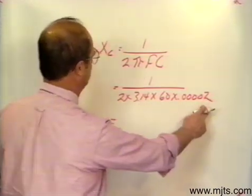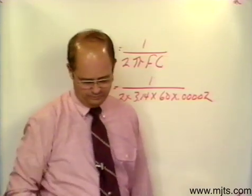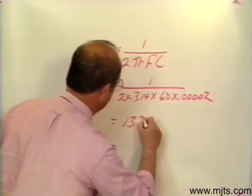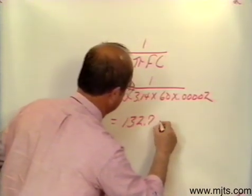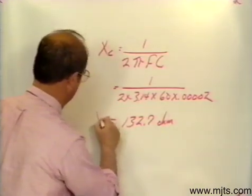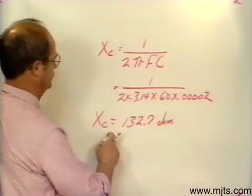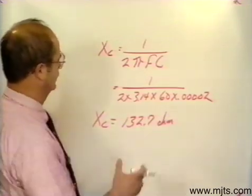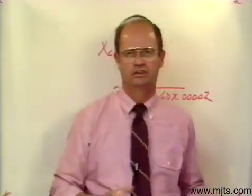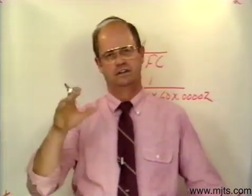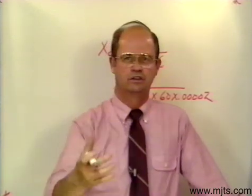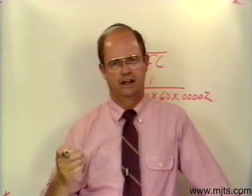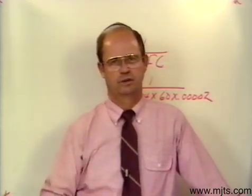If I multiply this out and divide that into one, we would come out with an answer of 132.7 ohms. Our capacitive reactance then is equal to 132.7 ohms. In other words, this is the opposition to current flow that this capacitor would create in the circuit if we had 60 cycles and a value of 20 microfarads for capacitance.